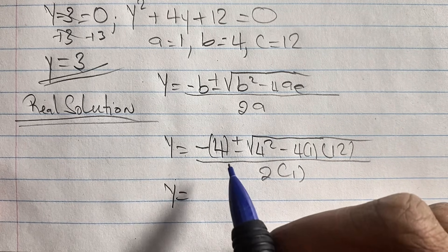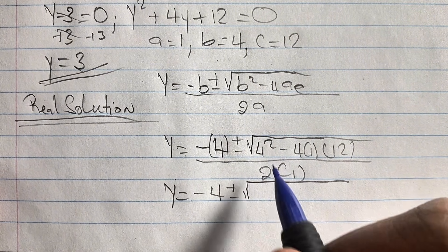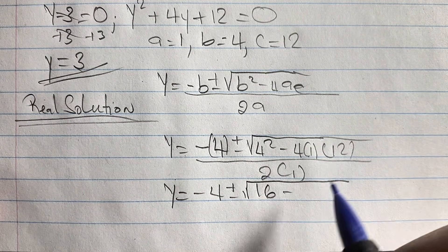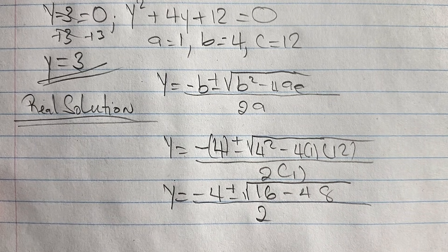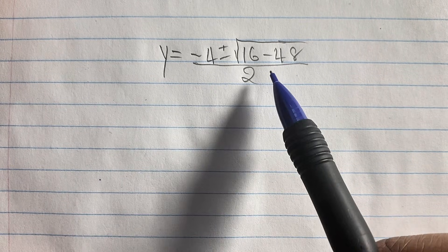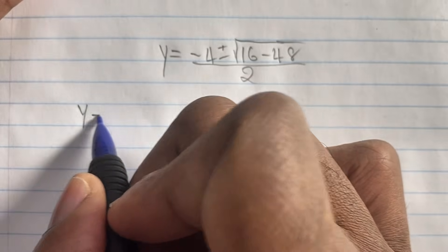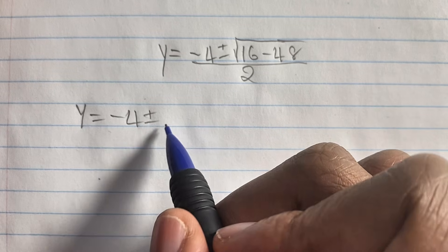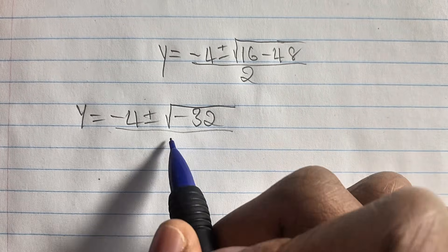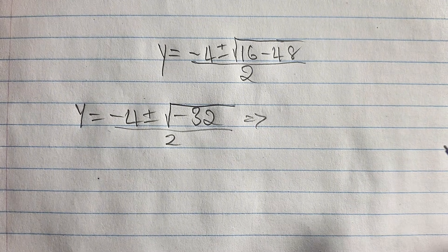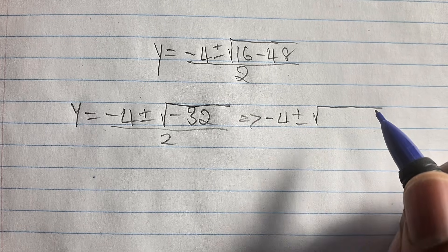Bringing that together, we have y = (−4 ± √(16 − 48)) / 2. Since 4 squared gives us 16, and 4 times 1 times 12 is 48, we have 16 minus 48 under the radical. This gives us y = (−4 ± √(−32)) / 2.